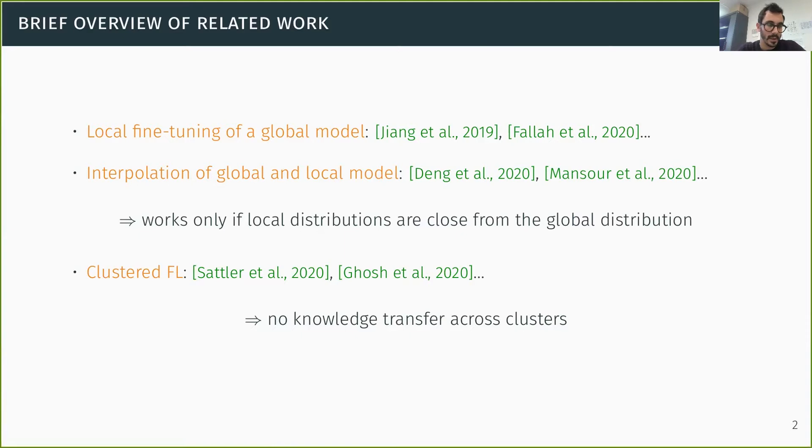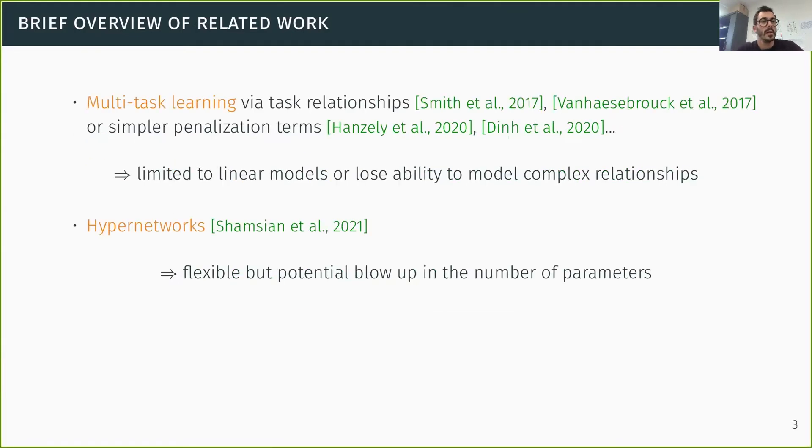There is also clustered FL, where essentially you try to cluster the users and then you learn a model specifically for each cluster. The problem there is that there is no knowledge transfer that is possible across users that are not in the same cluster. There are also approaches inspired from multitask learning, which are essentially based on learning and leveraging pairwise task relationships between clients. Unfortunately, these are often limited to learning linear models. And then there are approaches that can learn deeper models, but essentially rely on simpler penalization terms, such as regularizing with the distance between the personalized model to the average model. And so if you do that, you lose the ability to model complex relationships.